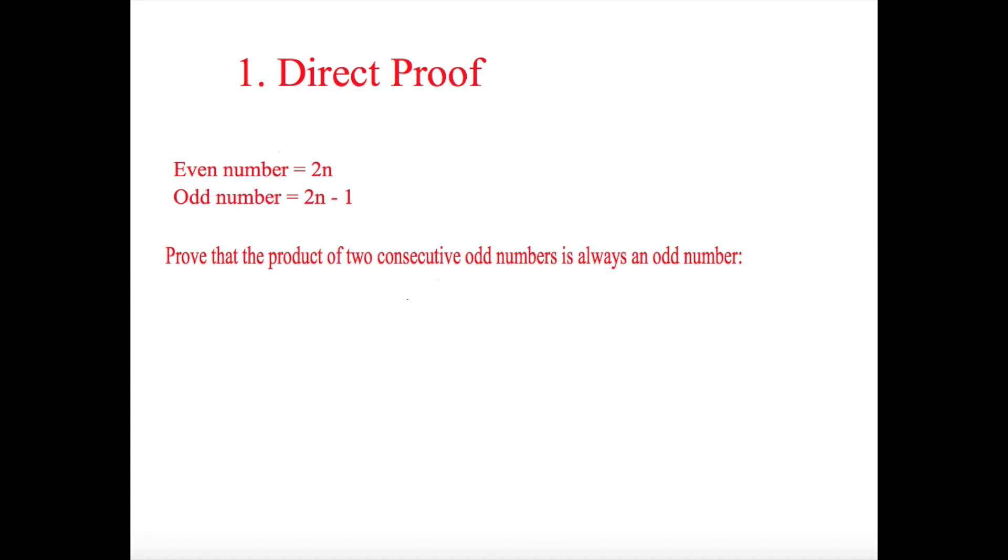Now there are infinite number of questions they can ask you, but an example I've got here is prove that the product of two consecutive odd numbers is always an odd number. So to answer this we need to first of all get two consecutive odd numbers. The first one is going to be 2n minus 1, put that in brackets because the product means we're going to times it, so the next one will be 2n minus 3.